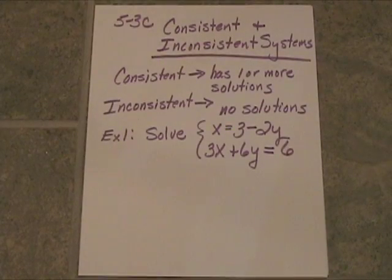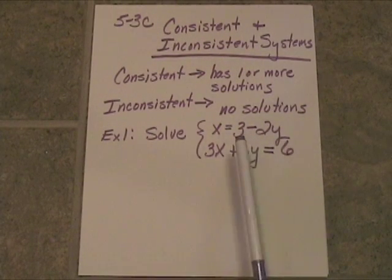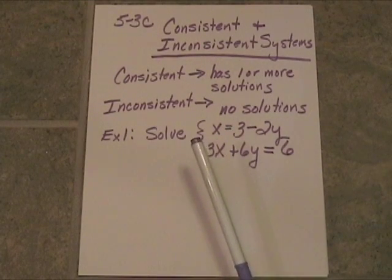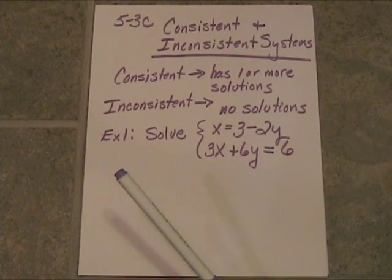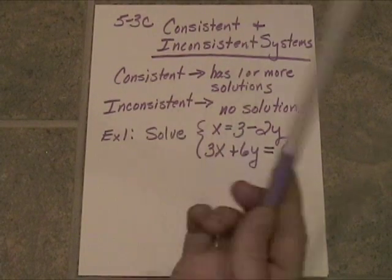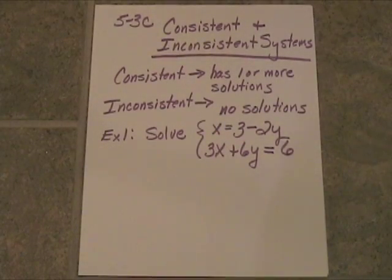All right, here we go. Here's our system. Two linear equations. We want to see whether they cross in a point, in which case there would be one solution, or who knows, maybe they'll be right on top of each other. Who knows? Maybe there won't be any solution at all, in which case they'd be parallel to each other. All right, let's see.